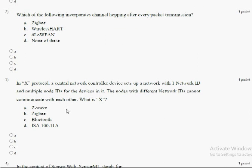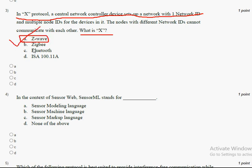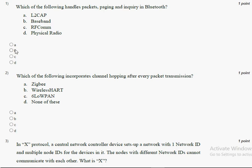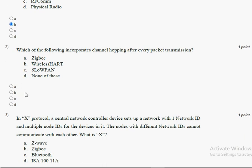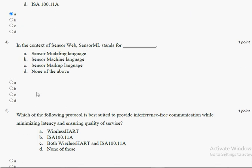Coming to the third question: in X protocol, a central controller device sets up a network — they are asking what X is. X is Z-wave, so mark option A. To summarize: first question is option B, second question is also option B, and third question is option A.